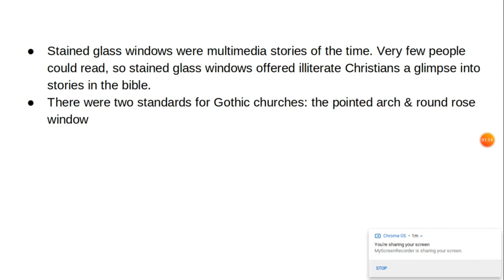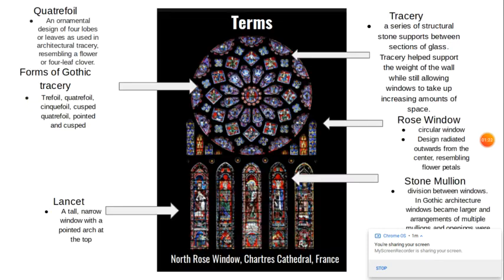There were two standards of Gothic churches. These two types of windows were the pointed arch and round rose window. And these are just some terms for the students to use in their project. I go over tracery, which is a series of structural stone supports between sections of glass. Tracery helped support the weight of the wall, but still allowed windows to take up increasing amounts of space.